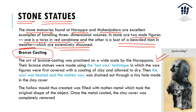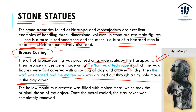Then we have bronze casting. The art of bronze casting was practiced on a wide scale by the Harappans using the lost wax technique — where wax figures were first covered with a coating of clay and then allowed to dry. The wax was then heated and the molten wax was drained out through a tiny hole made in the clay cover. The hollow mold was filled with molten metal which took the shape of the original form. Once it cooled, the clay cover was completely removed.